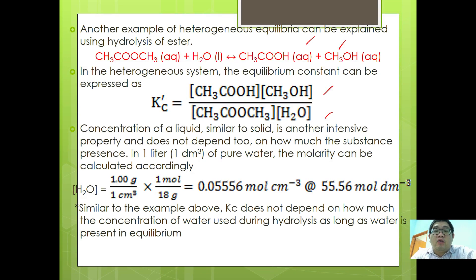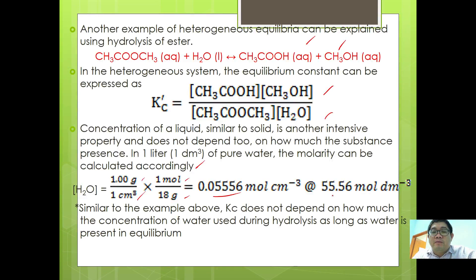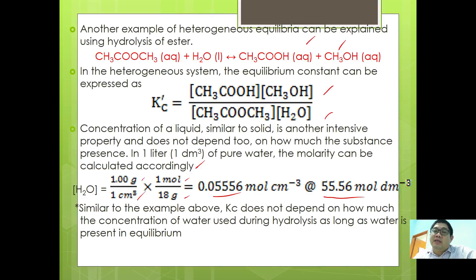In 1 litre (1 dm³) of pure water, the molarity can be calculated: density of water is 1 g/cm³; dividing by 18 g/mol gives 0.05556 mol/cm³, or 55.56 mol/dm³. As seen here, the concentration of water is so large that small changes in its concentration will not generally affect the equilibrium expression.